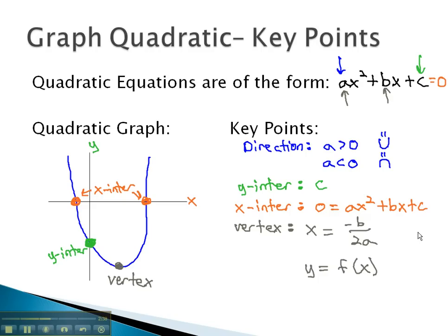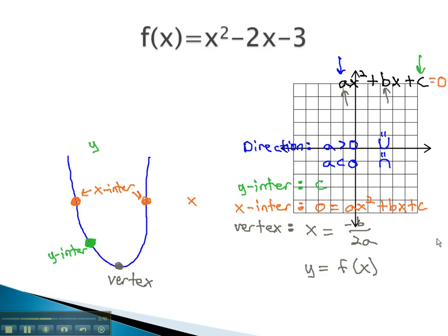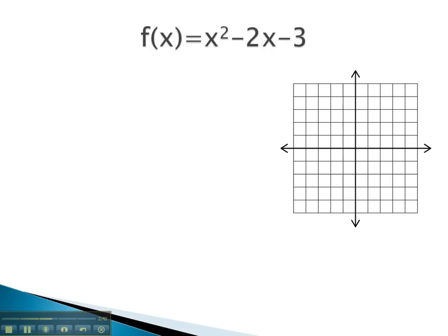Let's take a look at an example where we identify this key information to help us graph the function. In this problem, we can start by identifying the direction based on the value for a, which is a positive 1. Because that's positive, we know the direction and shape will be a happy parabola opening up.